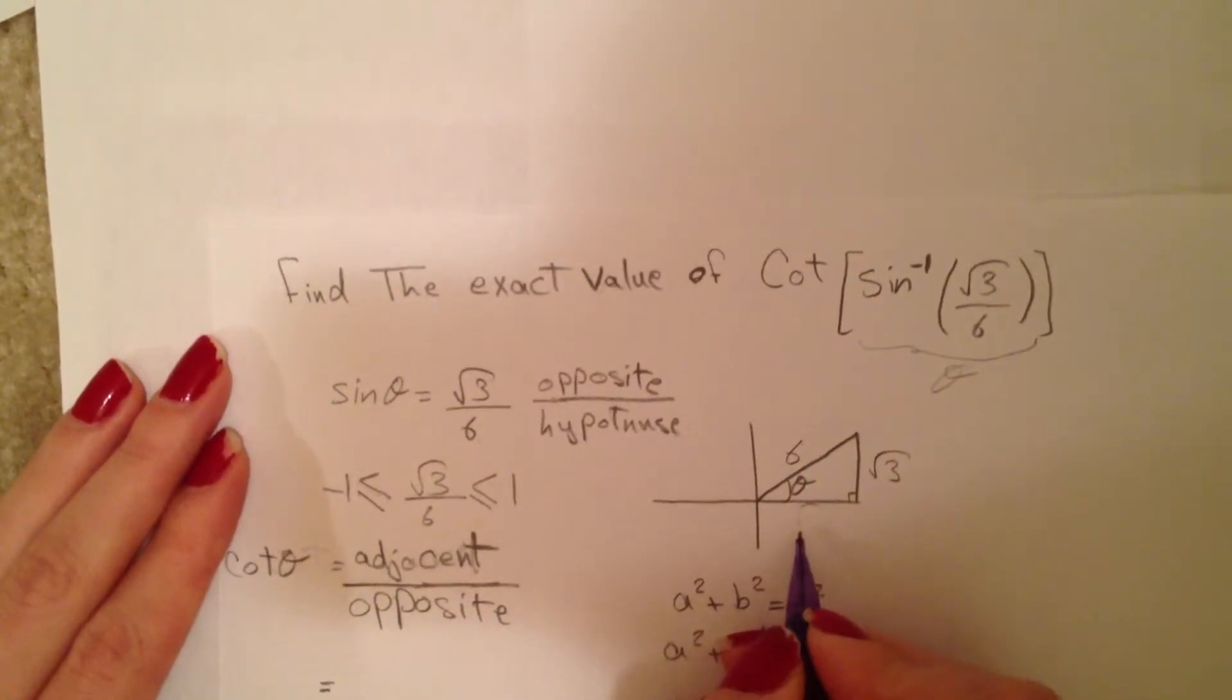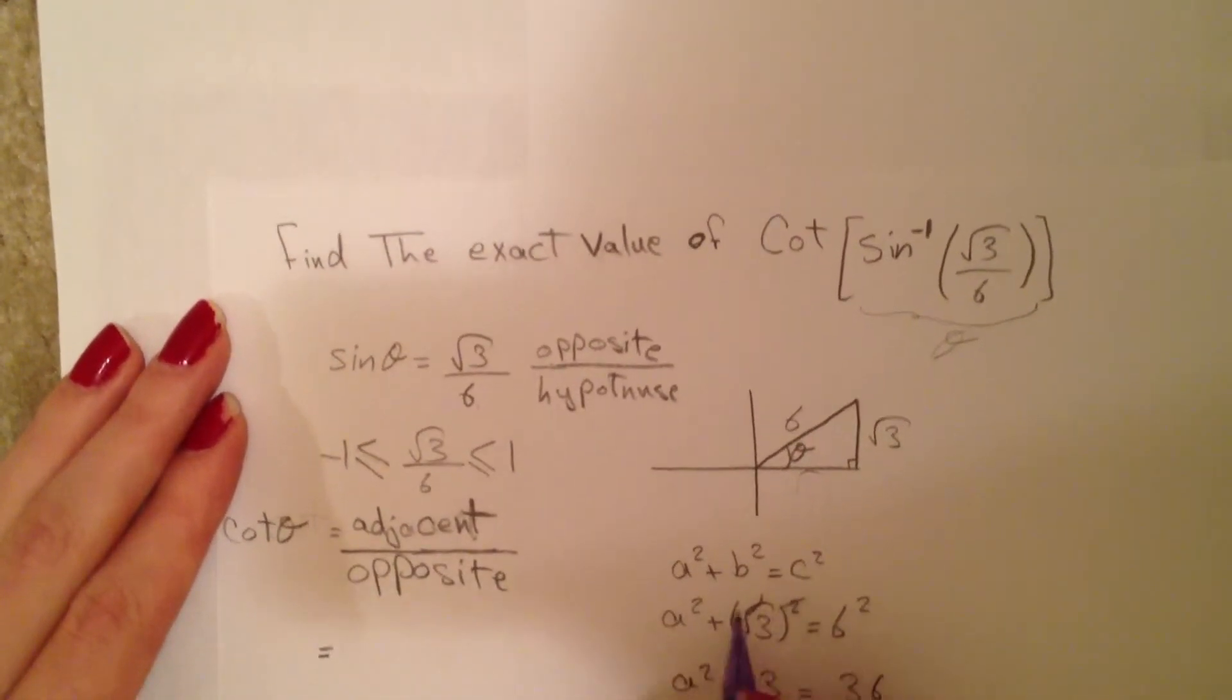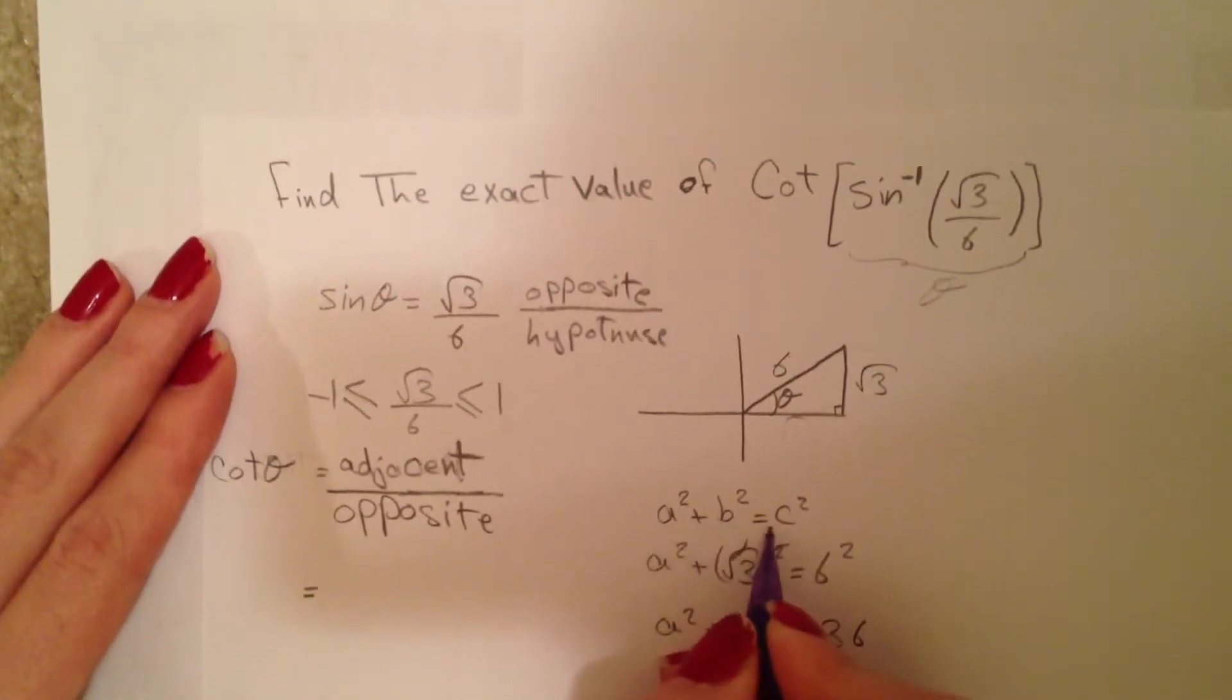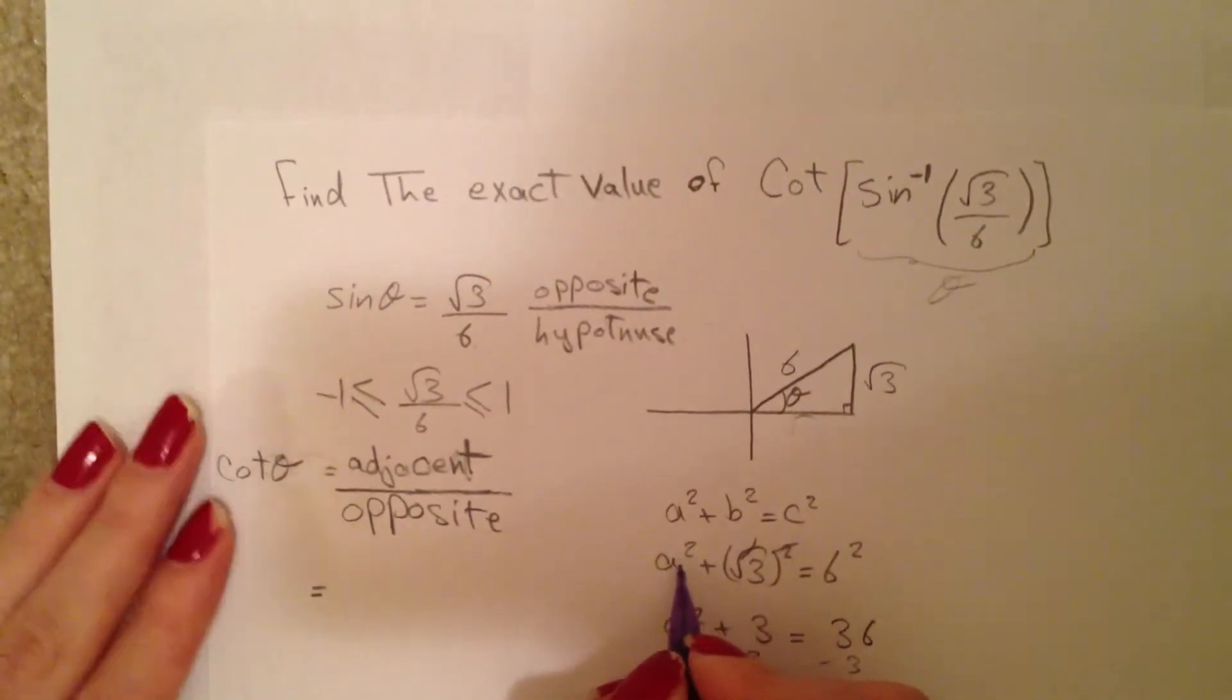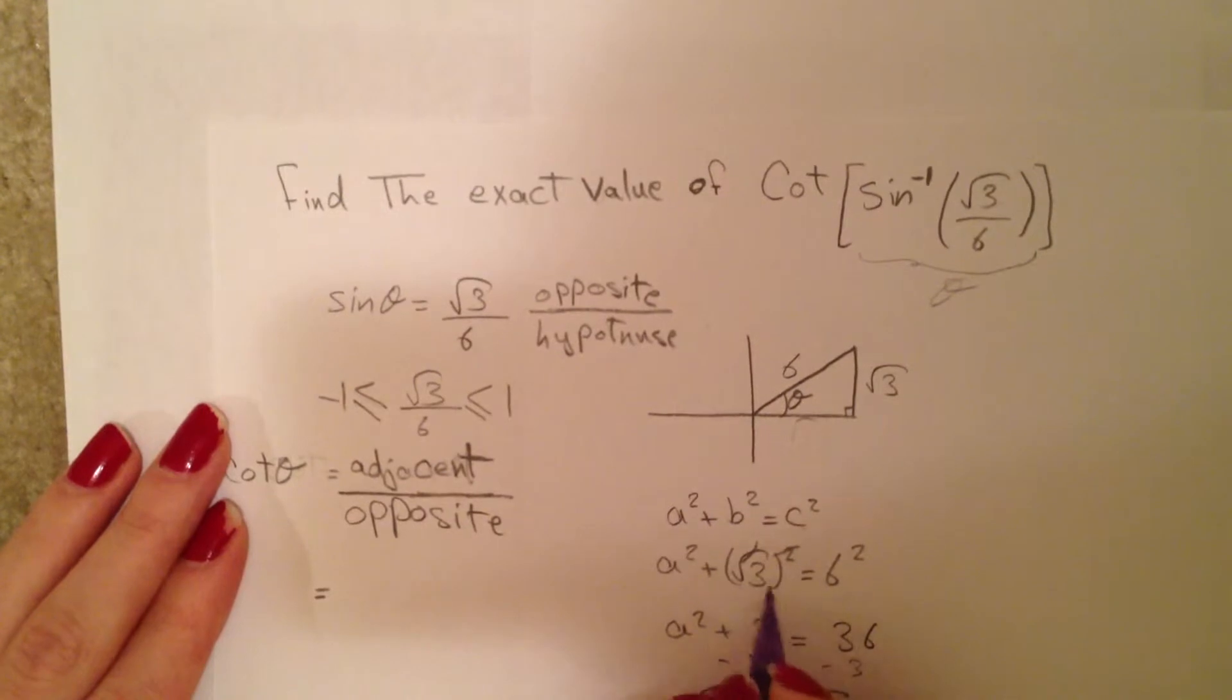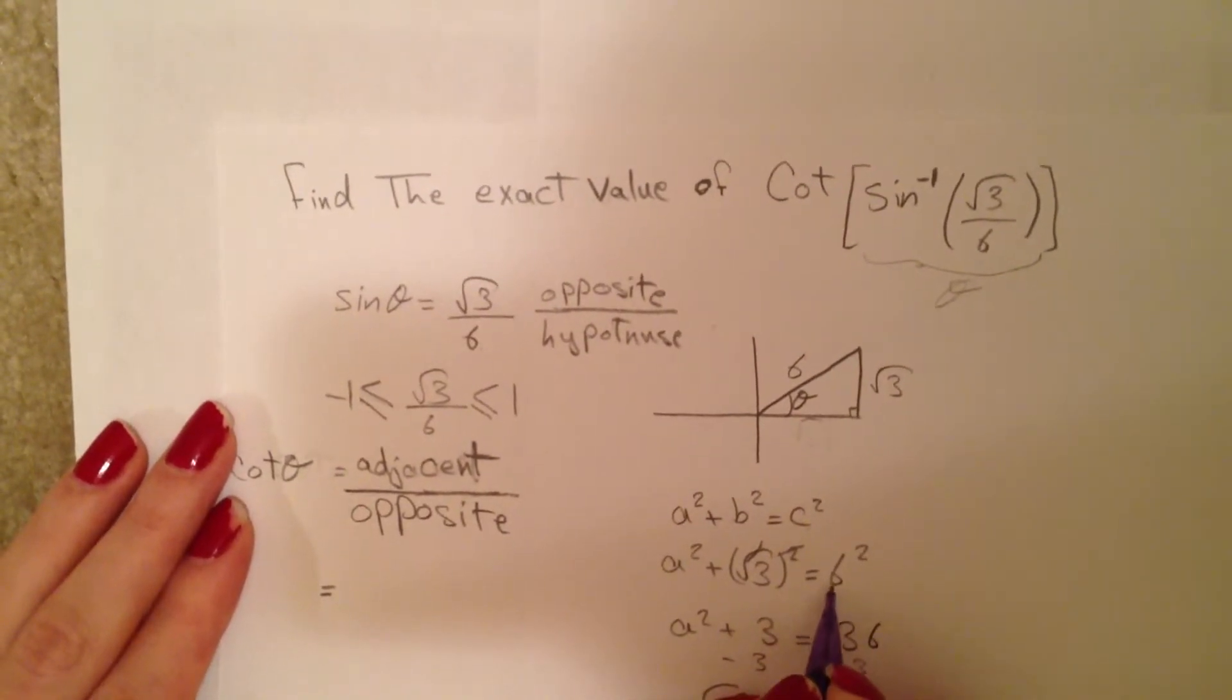To find our adjacent side, I will use the Pythagorean theorem. a² + b² = c². a² + (√3)² = 6².